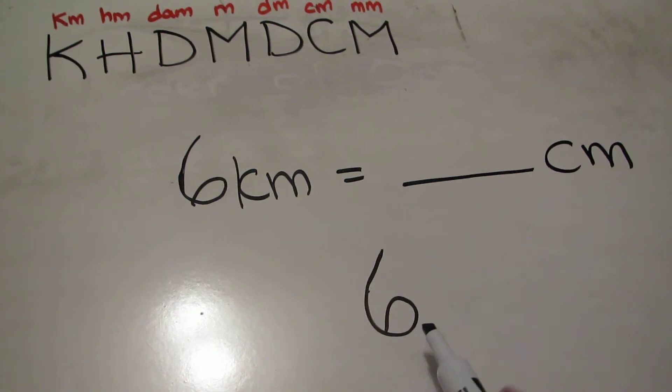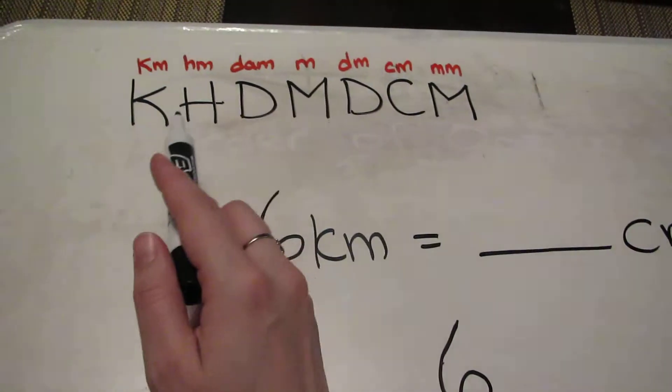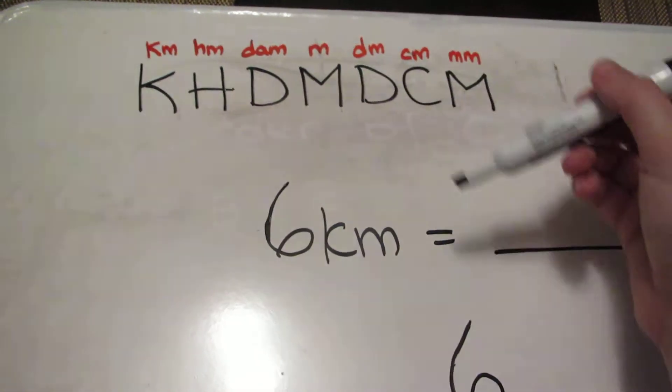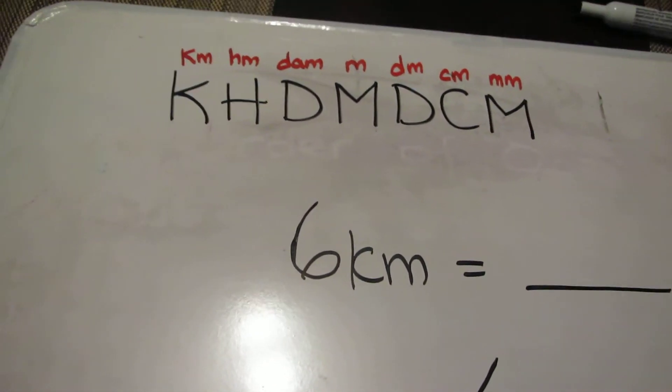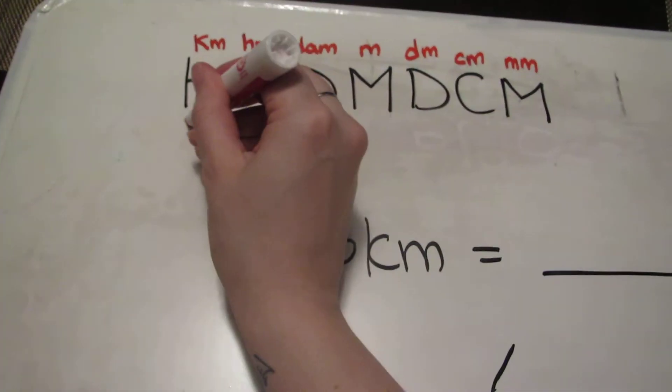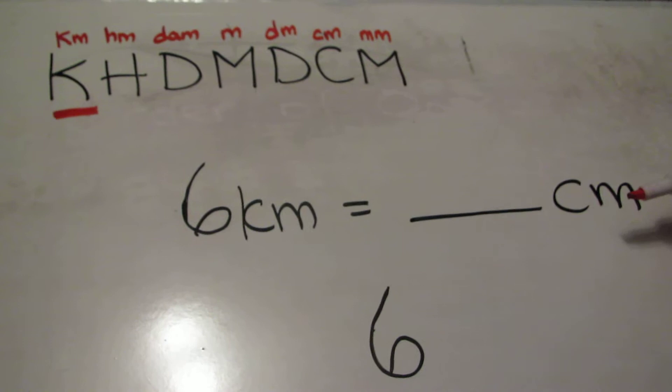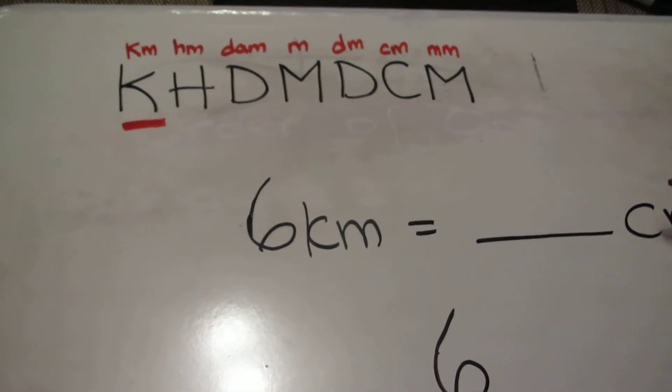Starting with my six, I'm going to look back at my letters to help me remember which way I'm going. I realize I'm starting at kilometers so I underline here. Then I want to see where I'm going which is centimeters, so I'm counting how many jumps I'm making to go from kilometers to centimeters.